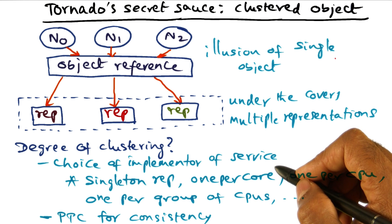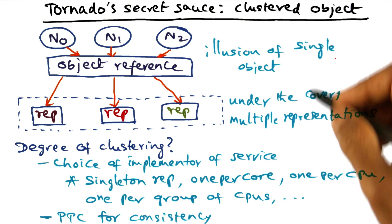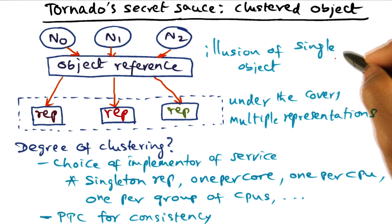But when designing the service, you can think abstractly about the components of that service containing objects. And each object is giving you the illusion that it is a single object reference.